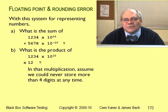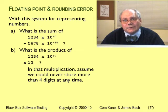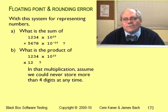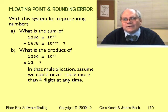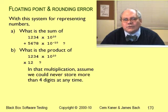This slide gives you a puzzle to work on with your friends. Should be easy, but I'm not going to give you the answer. Assume that you have four significant digits and a sign bit for the mantissa, and two significant digits with a sign bit for the exponent. What should the results be for these two calculations?